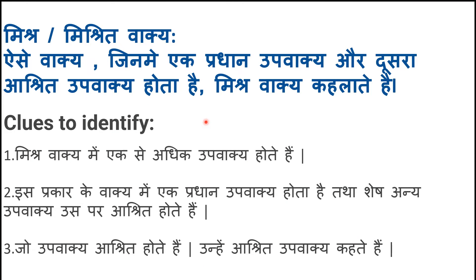Now let's talk about the third type — mishra or mishrit vaakya, complex sentences. Aise vaakya jinmein ek pradhan upvaakya aur doosra aashrit upvaakya hota hai, mishra vaakya kehlate hain. Such sentences have one main sentence and the others are dependent on that — they are known as complex mishrit vaakya. There is more than one upvaakya; one is the pradhan upvaakya and the rest are aashrit — dependent — upvaakya.